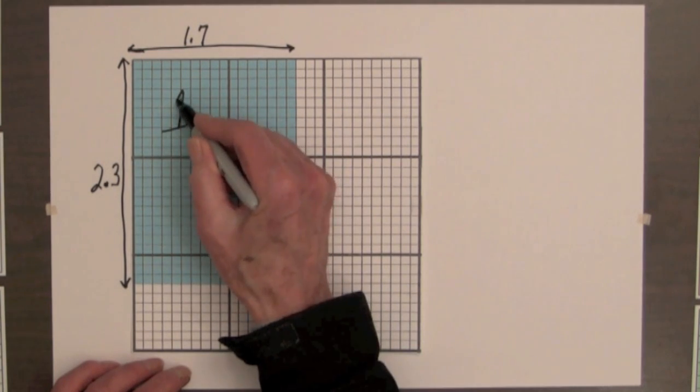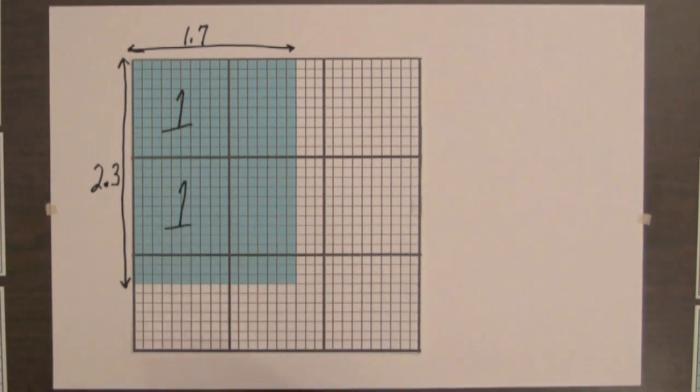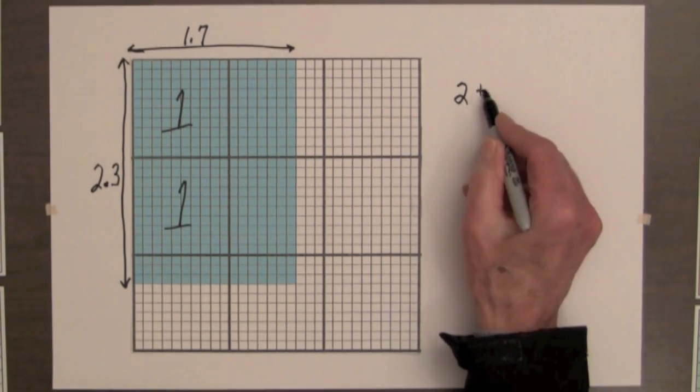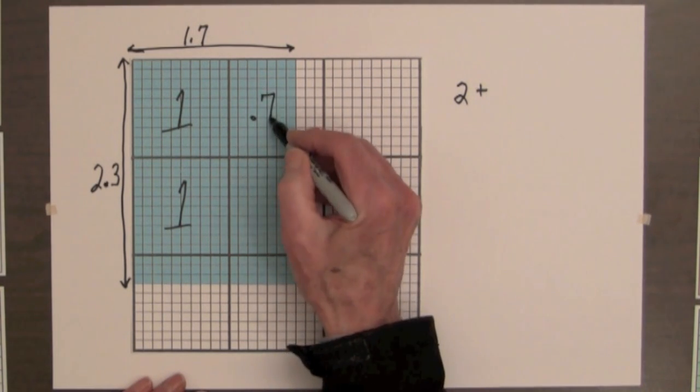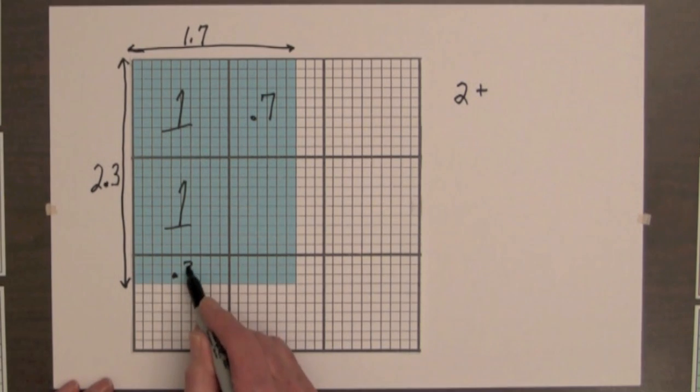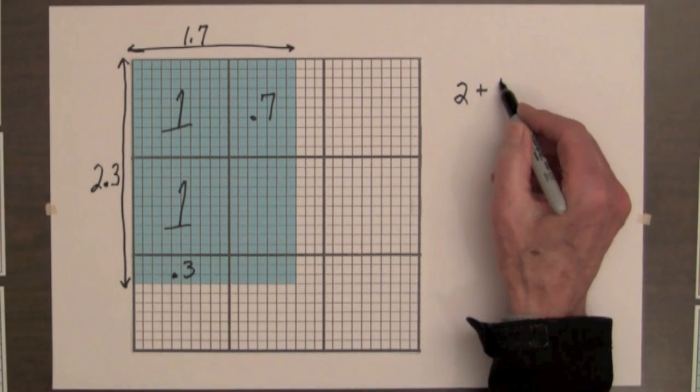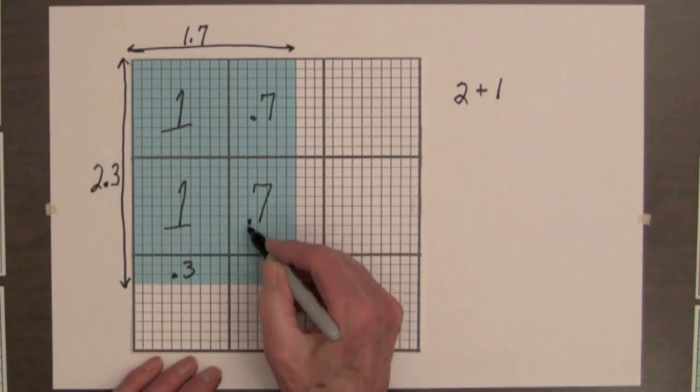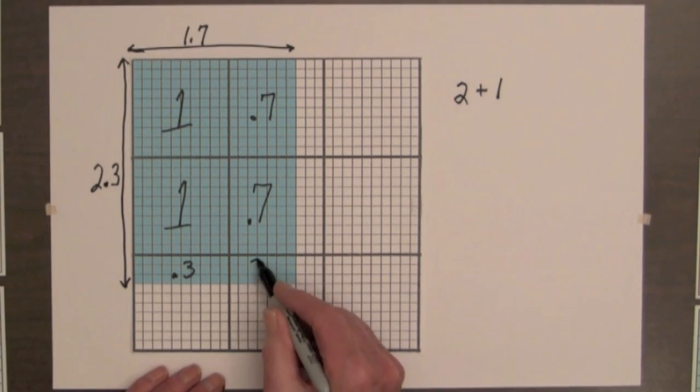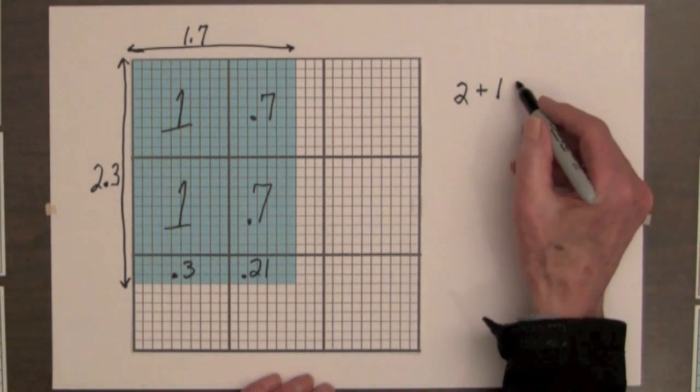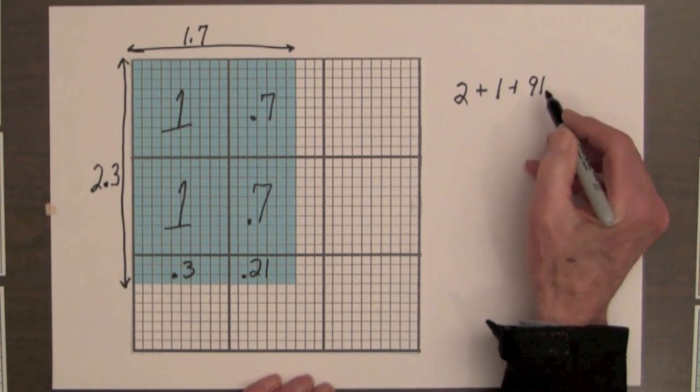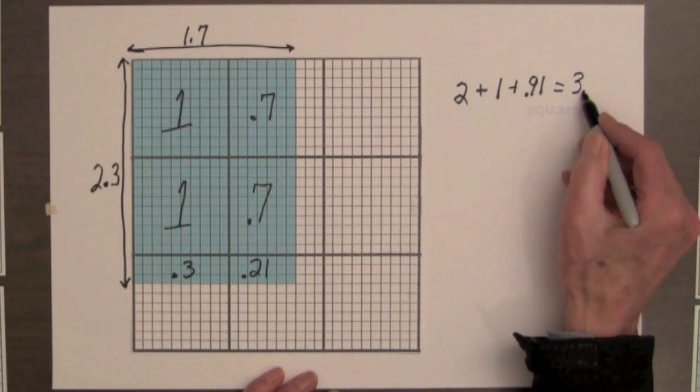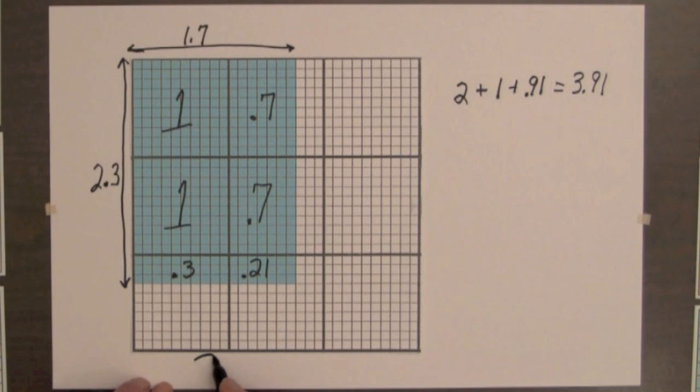How many whole squares and parts of a square are in this shaded region? We have 2 whole squares in these two regions. We have 7 full columns for 7 tenths, and 3 full rows for 3 tenths. And 7 tenths and 3 tenths is another unit. And we have 7 tenths in this region. And this region down here is 3 by 7, 21 hundredths. So we have 2 plus 1 plus 91 hundredths. And this equals 3 and 91 hundredths squares. 2 and 3 tenths times 1 and 7 tenths equals 3 and 91 hundredths squares.